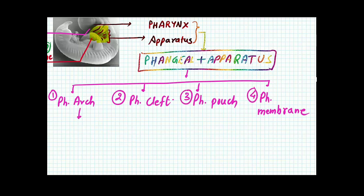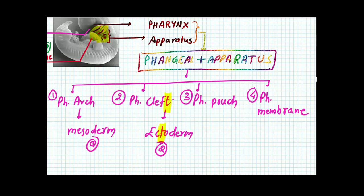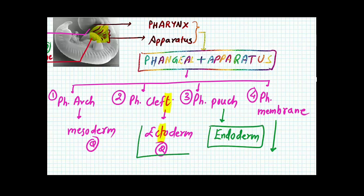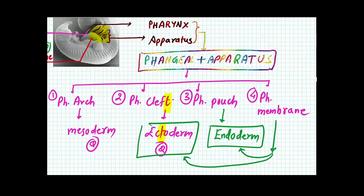Later I will tell you this arch is derived from the mesoderm, MCQ. The cleft is derived from the ectoderm, MCQ. How can you solve this MCQ? Can you see, ecto is having T, cleft is having T. So this is your trick. While the pharyngeal pouch, it is endodermal in origin, and later we will see the pharyngeal membrane is membrane-like structure which is made by the endoderm and the ectoderm meeting point. Another detail I will tell you later. So this is the pharyngeal apparatus.